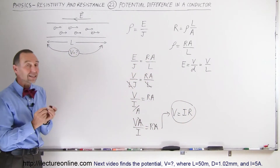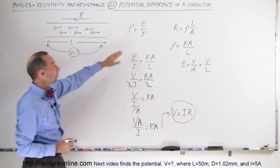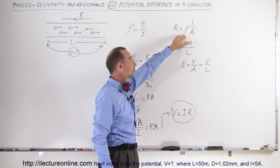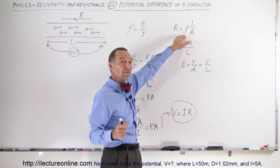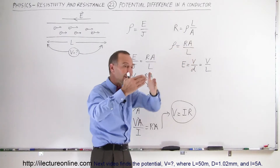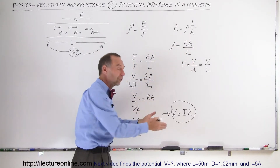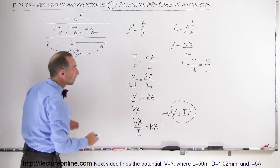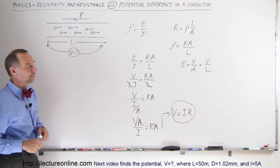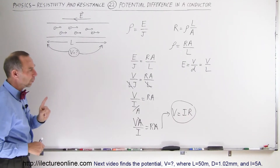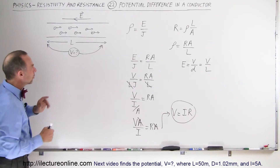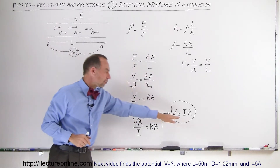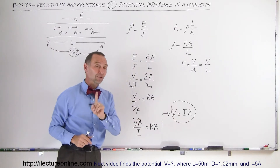That, of course, is Ohm's Law, and we knew that already. By taking the definitions of resistivity and how to find the resistance in terms of resistivity and combining them, we can show that the potential difference across any piece of wire is simply equal to I times R. Now, if we want to do it in terms of a specific length of wire, this equation doesn't help us directly.